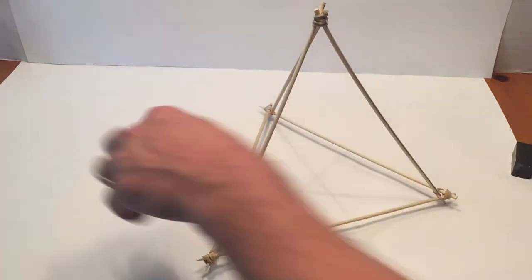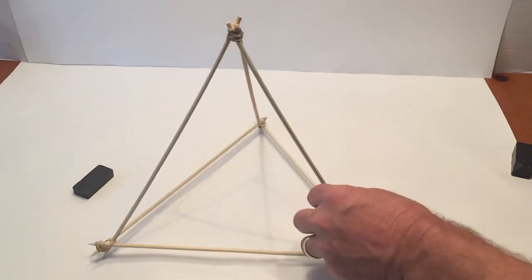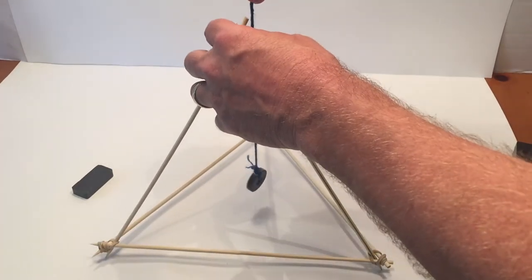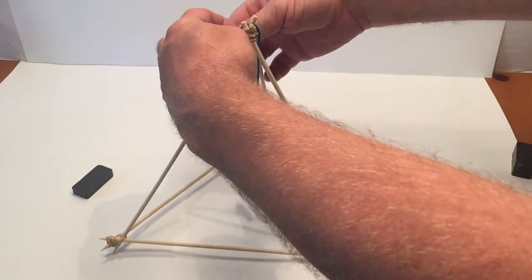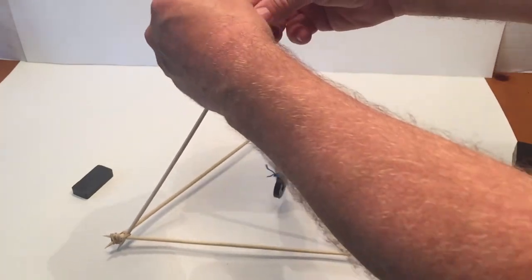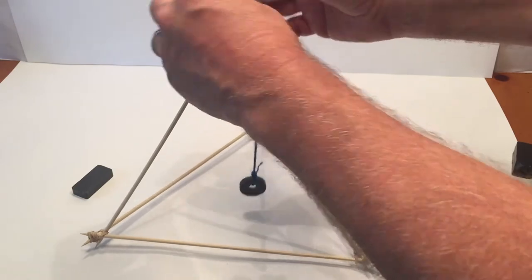This might take a couple times to get it tied right. But once you do, I'm going to move these magnets out of the way, and then we're going to tie a knot and hang it down from the top and try to get it about an inch off. So this might take a couple tries.